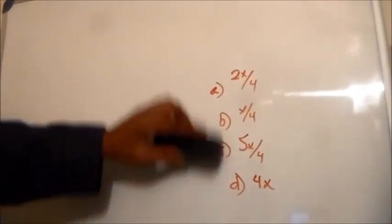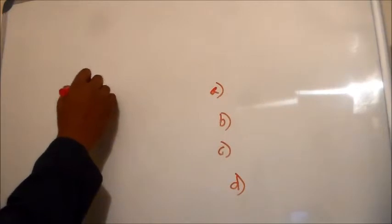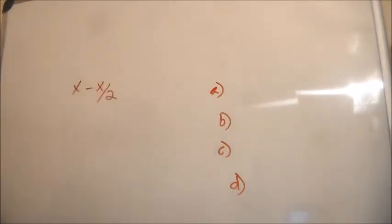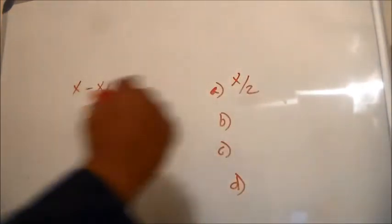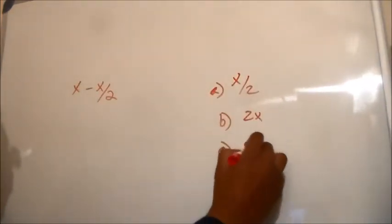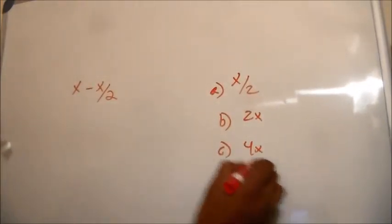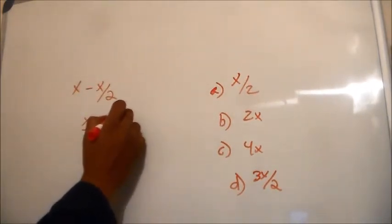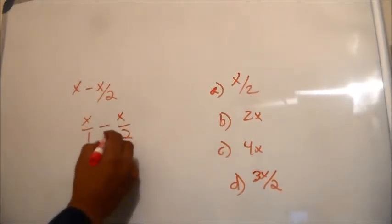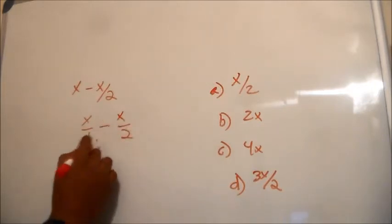I'm going to go ahead and do question 8 because it's kind of similar. It's X minus X over 2. Our answers are: A is X over 2, B is 2X, C is 4X, and D is 3X over 2. Again, we write it as X over 1 minus X over 2.